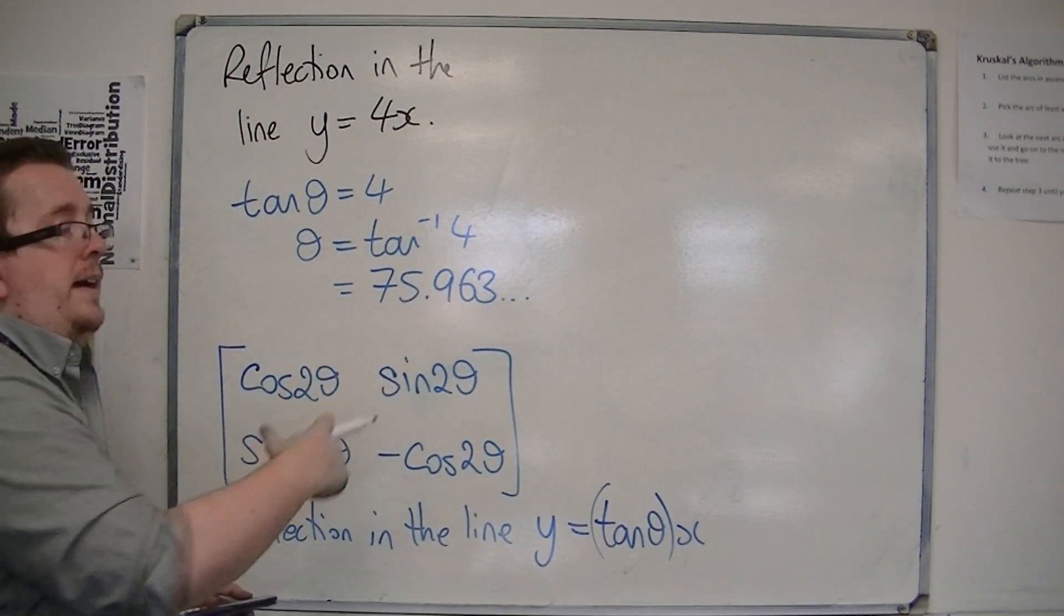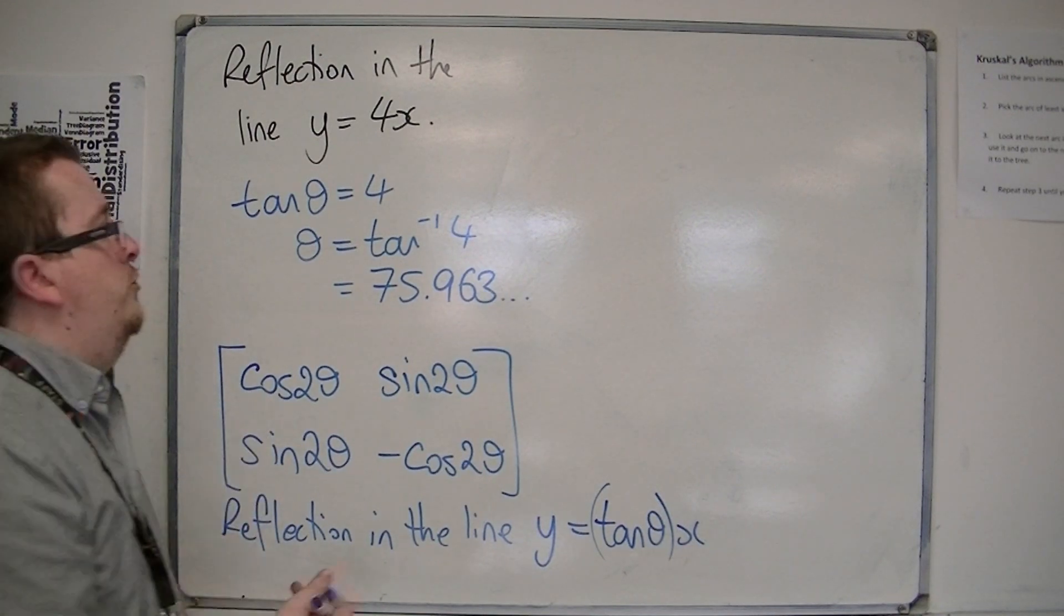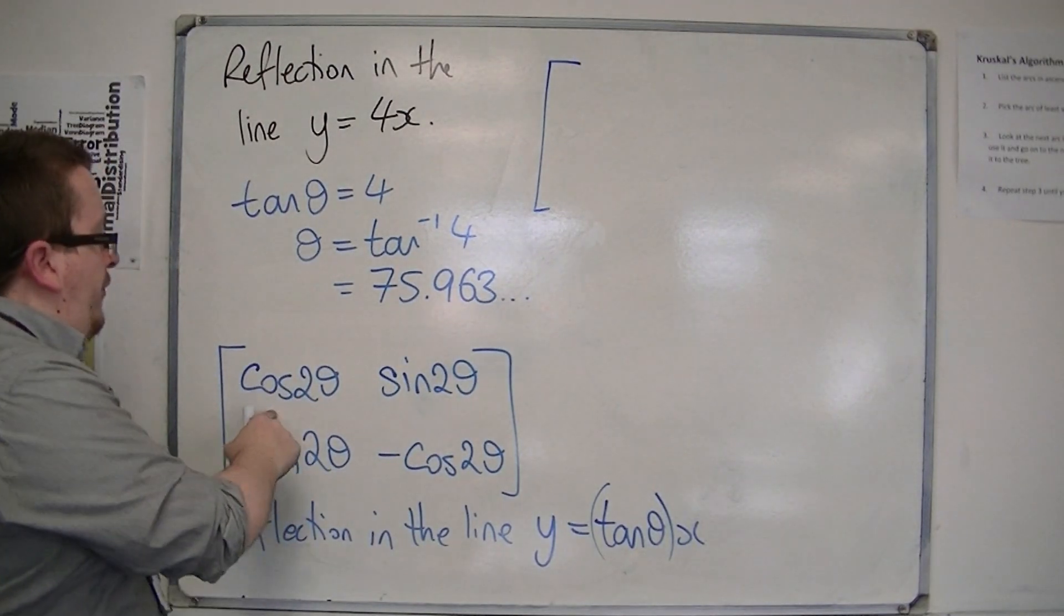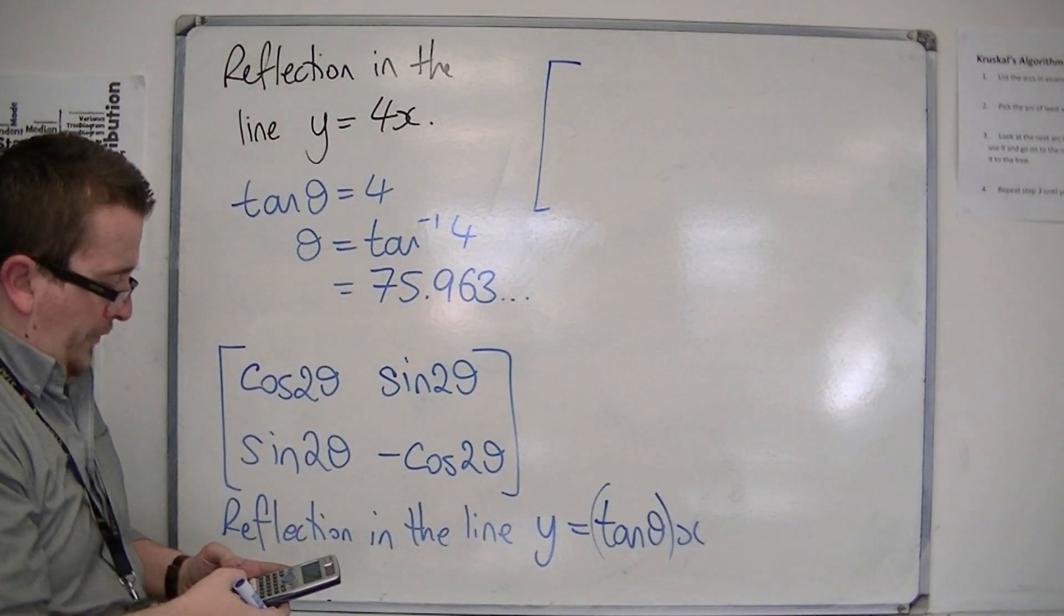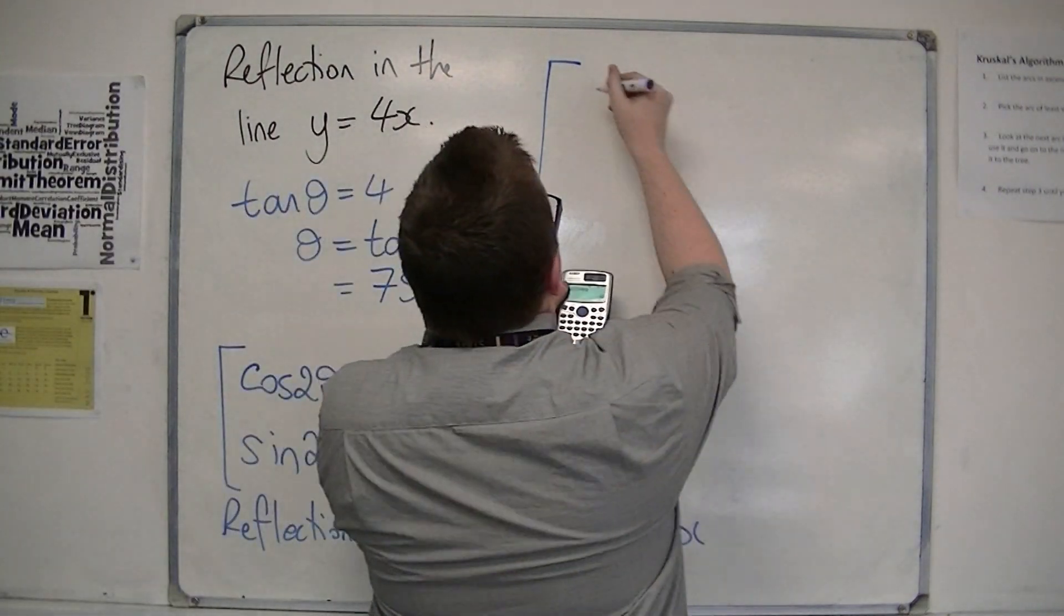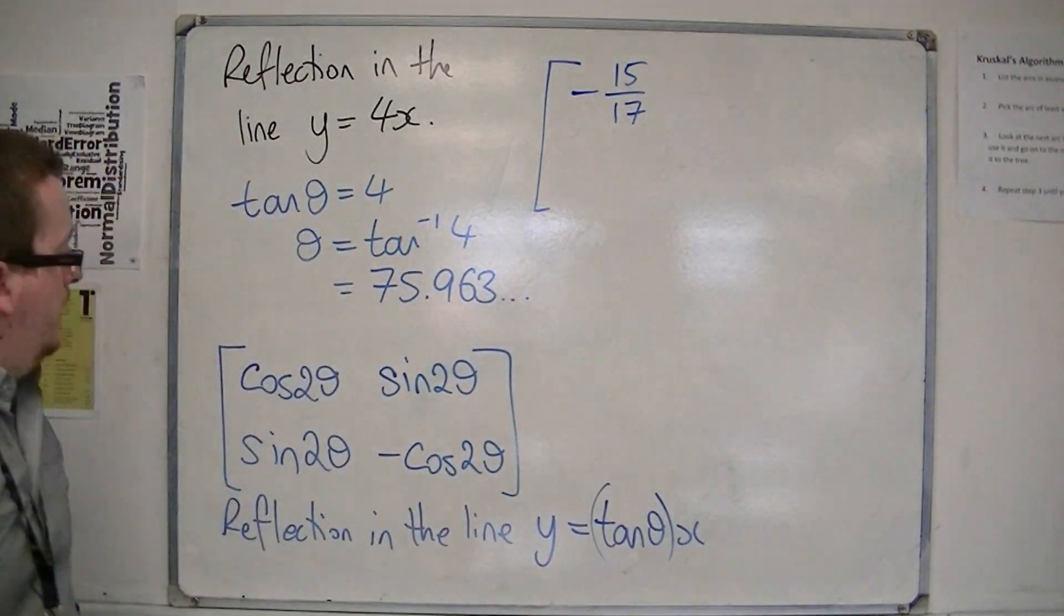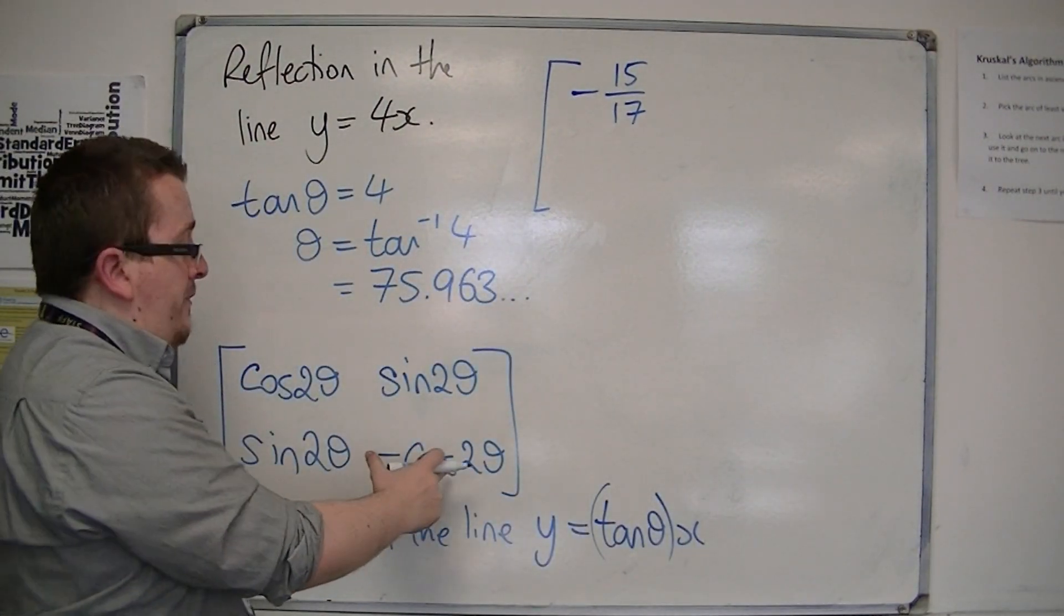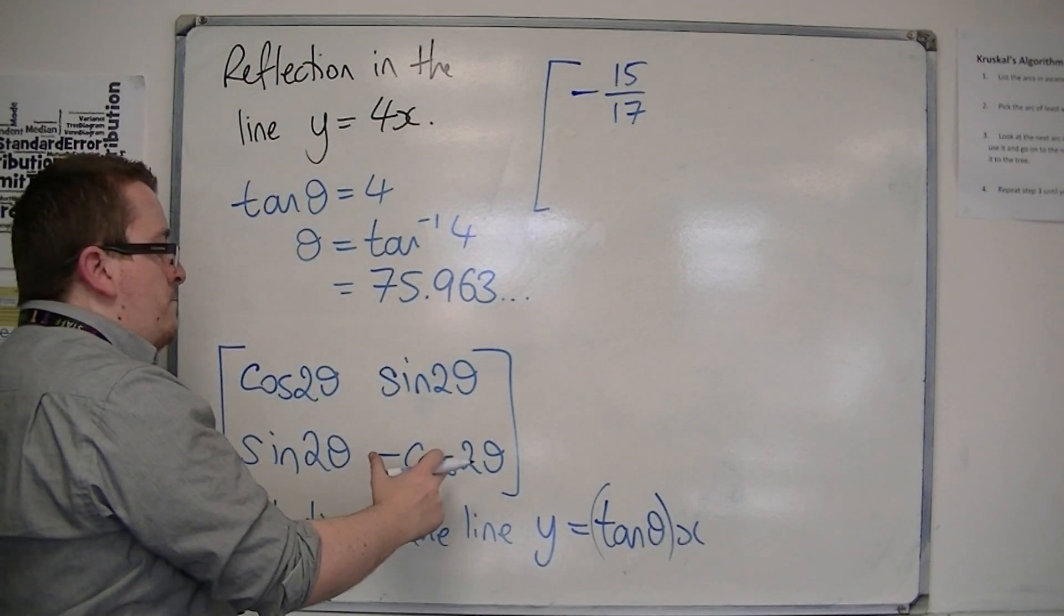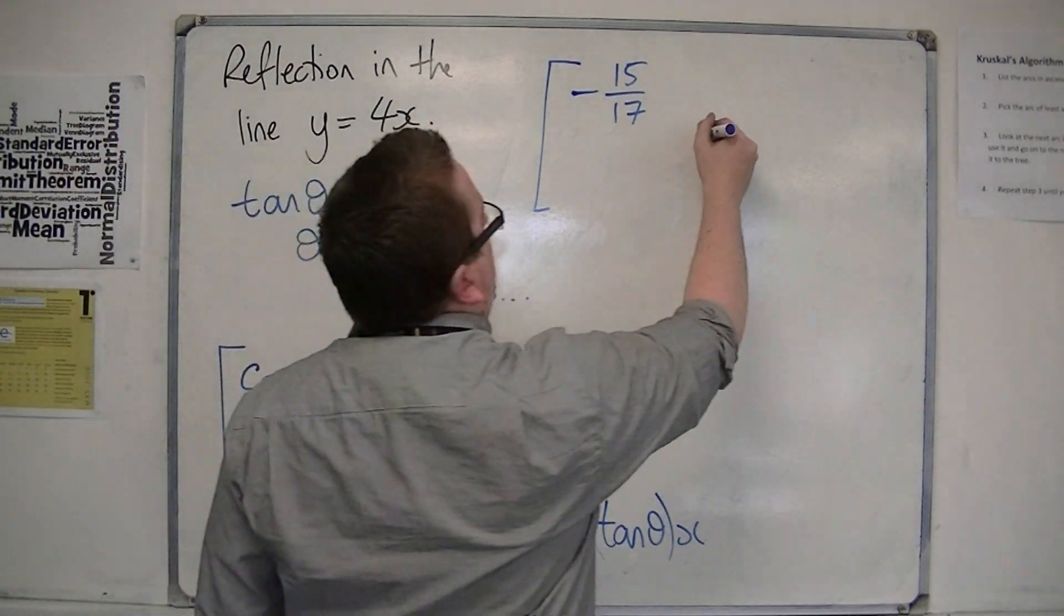I'm going to use that as my value of theta and substitute it into this matrix. So I want cos of two lots of that angle. Cos of two lots of that angle is minus 15 over 17. So that would mean that this is minus minus 15 over 17, which is 15 over 17, positive.